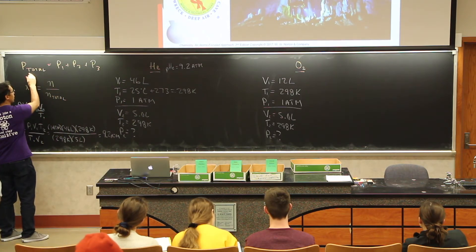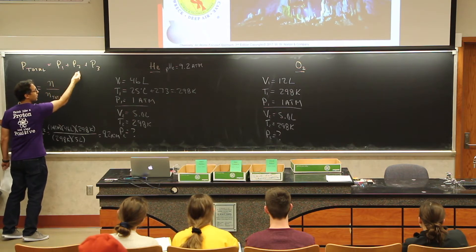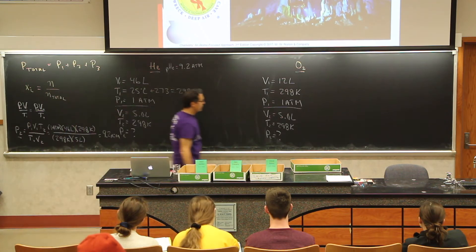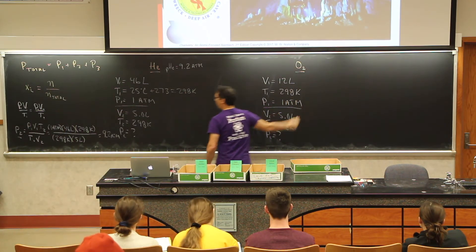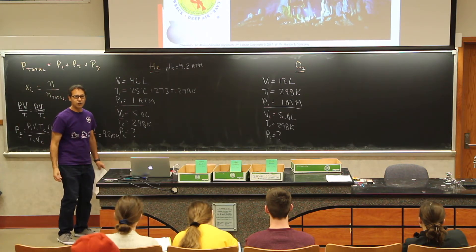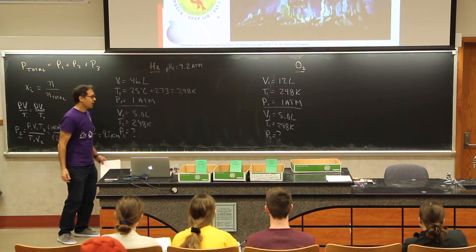The total pressure in the tank is going to be my partial pressure of helium plus my partial pressure of oxygen. I've got the first step here. The second one, I just take this and plug it into my equation. Let's plug some numbers in here.